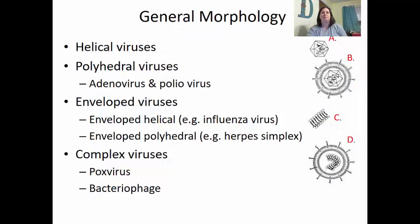Let's look at the general morphology of a virus. There are different types of viruses. Helical viruses are long rods that can be either rigid or flexible. Some examples of helical viruses are things like rabies, Ebola, and hemorrhagic fever.